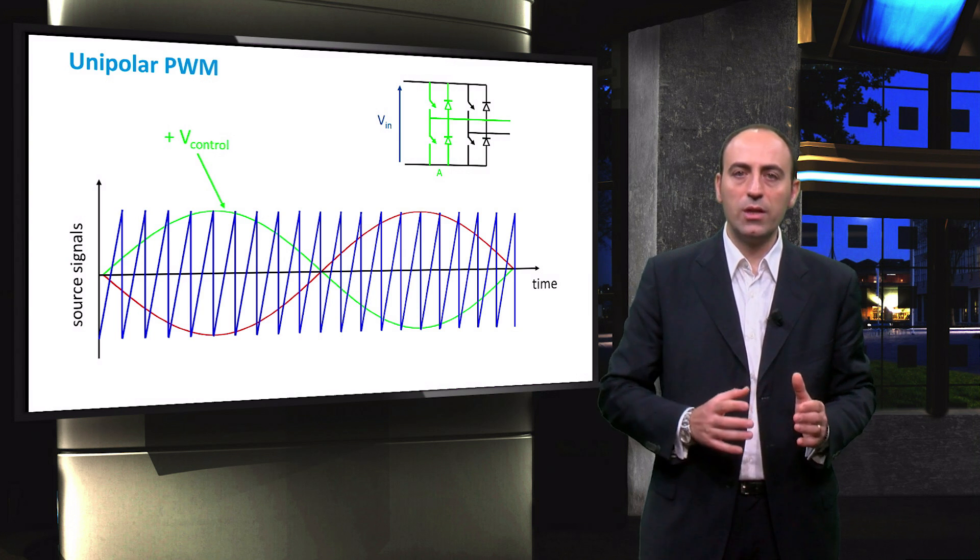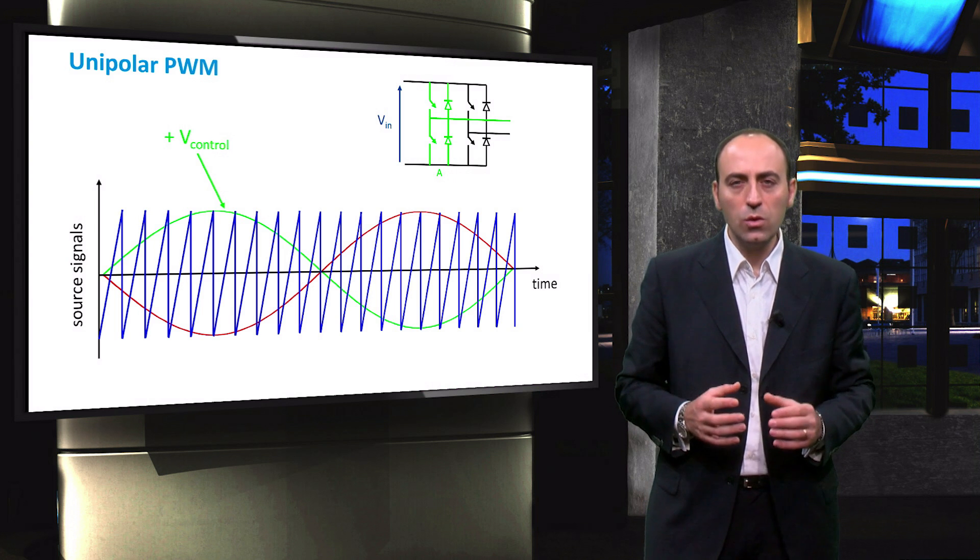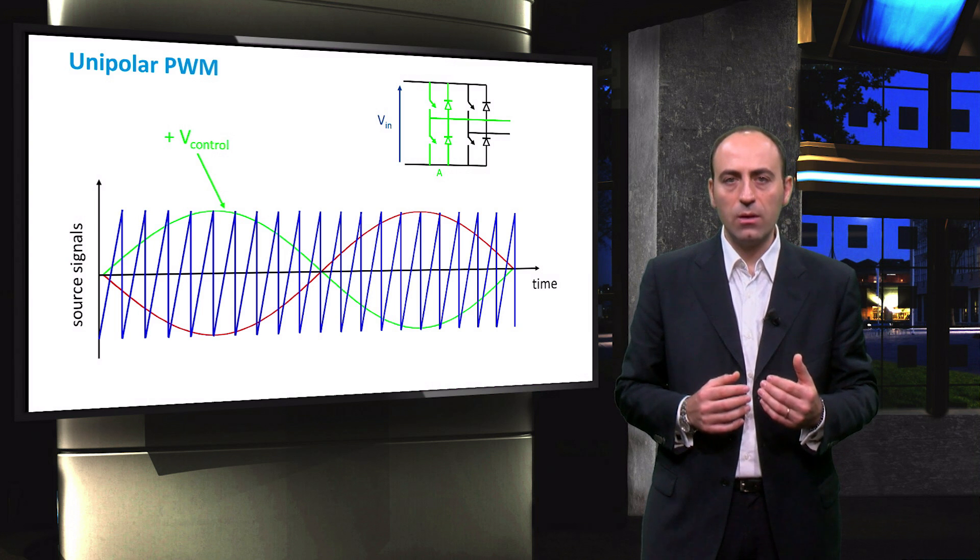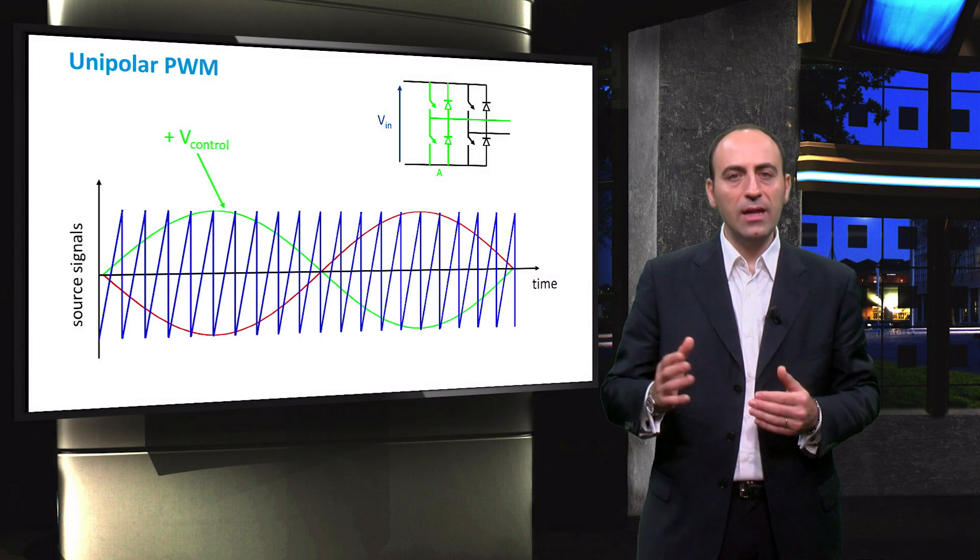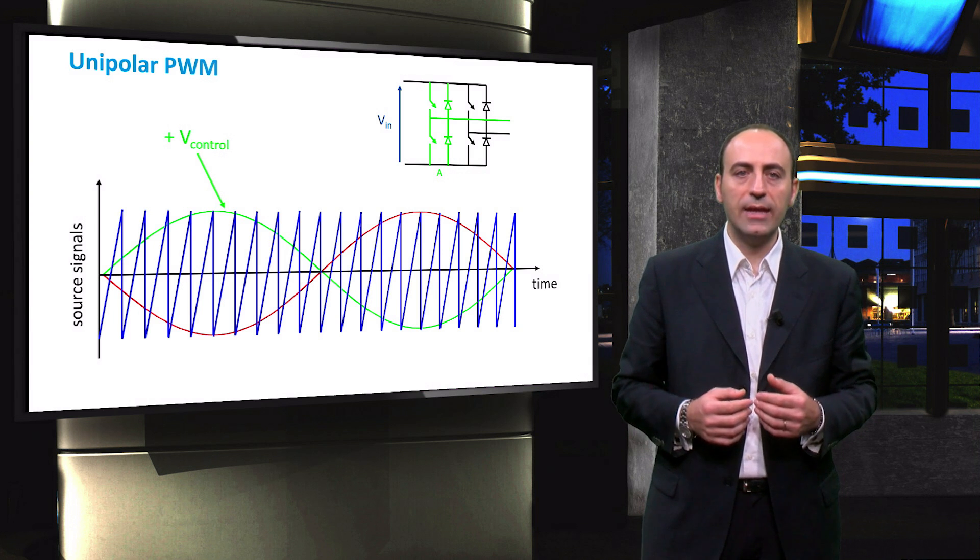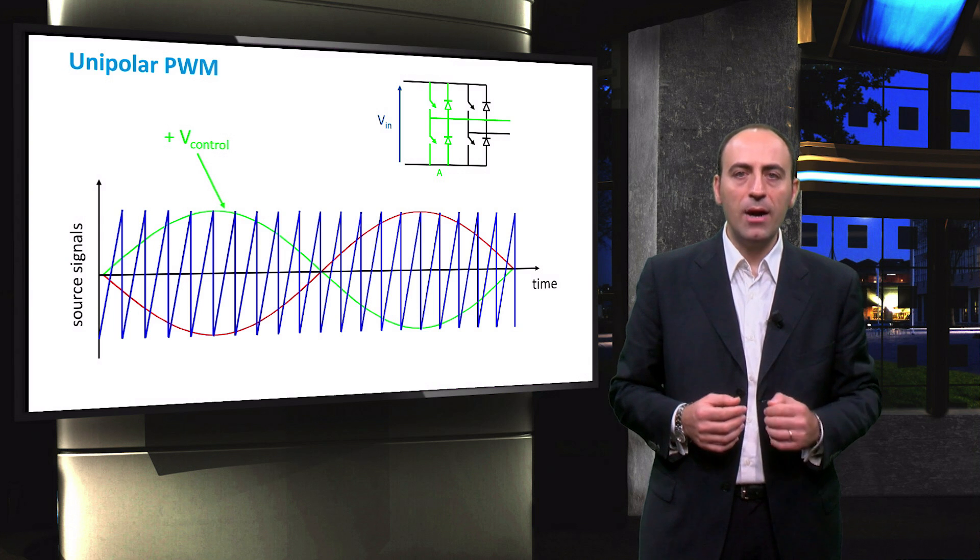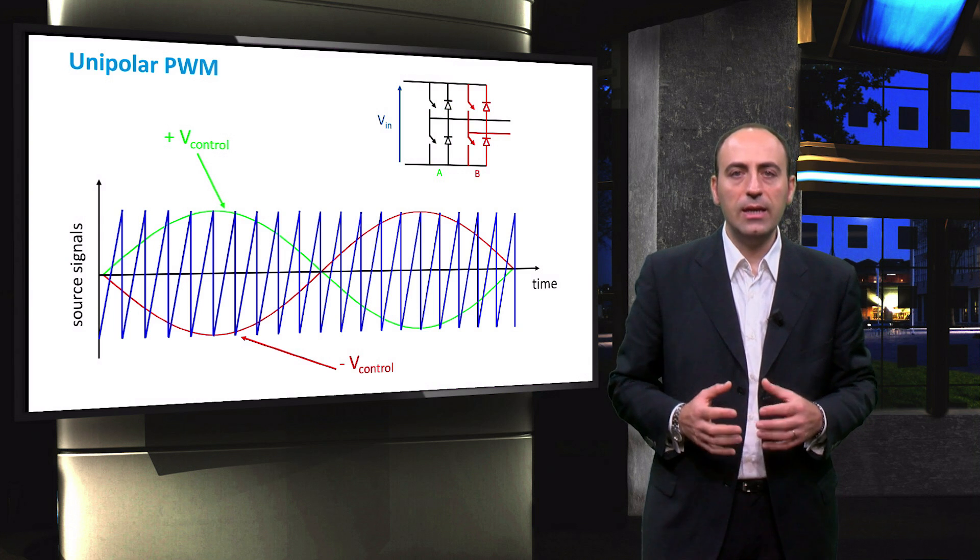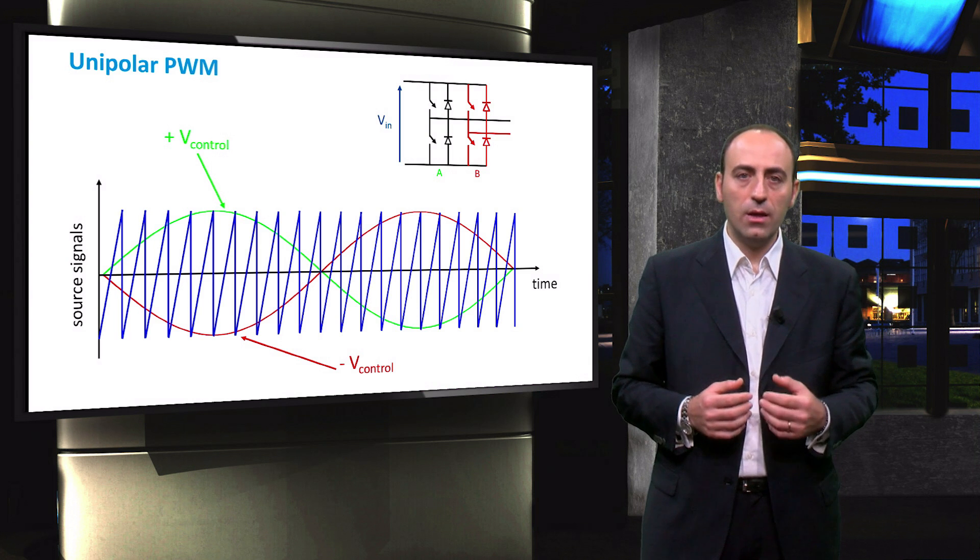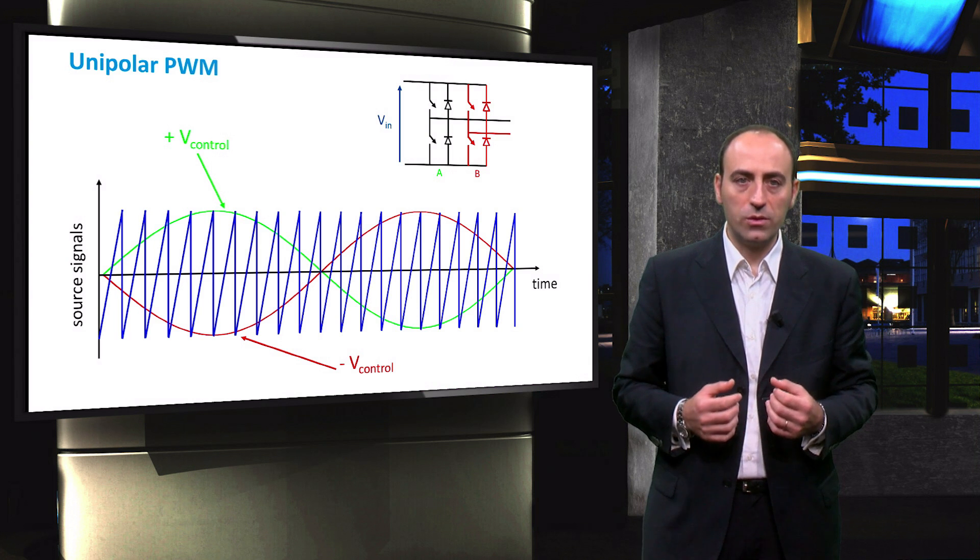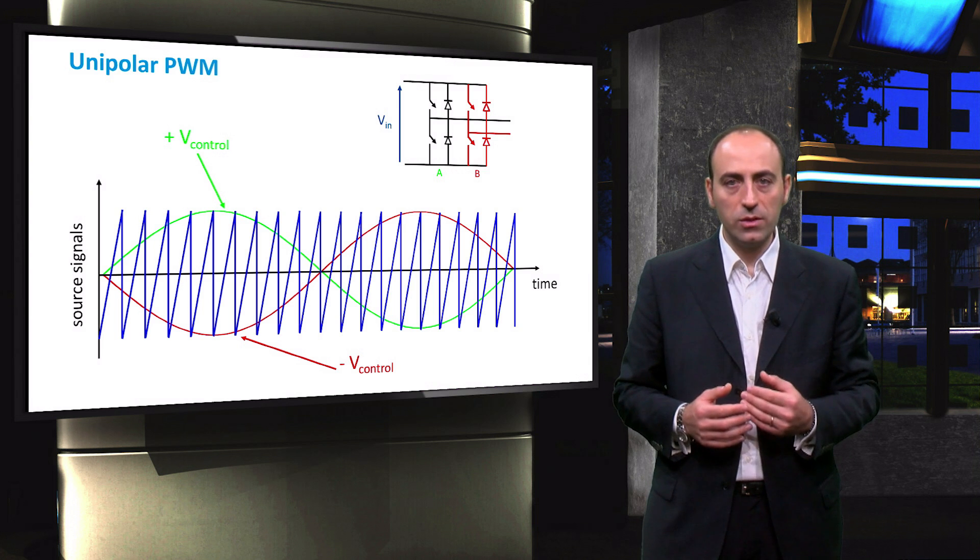The first leg, usually called leg A, is controlled by comparing the sawtooth signal with a plus V control signal. On the other hand, the second leg, called leg B, is controlled with a minus V control signal. In leg A, when V control is higher than V sawtooth, the voltage equals the input voltage, while in the other case the voltage is zero.